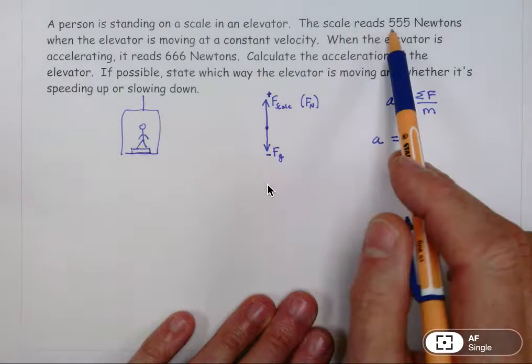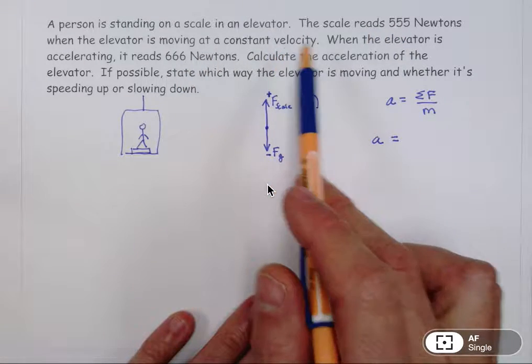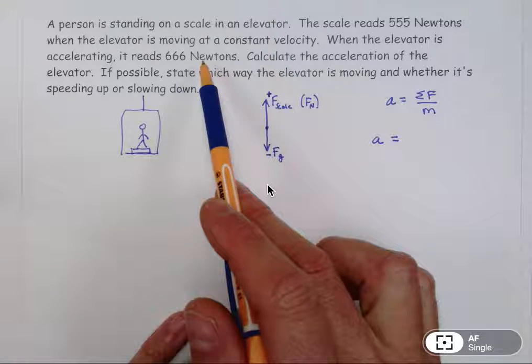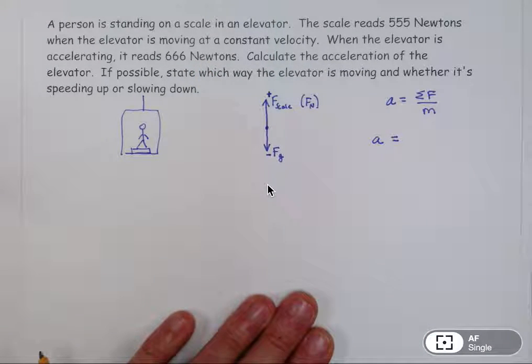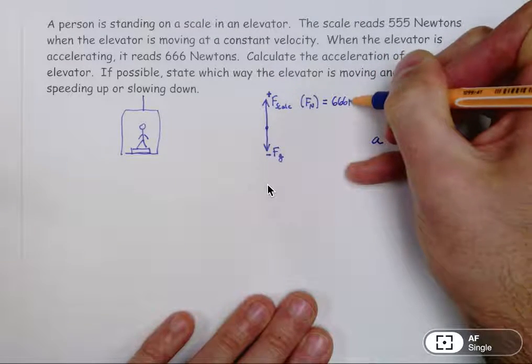And that's where the numbers that we see in the statement of the problem are going to help us out. It says that the scale reads 555 newtons when the elevator is moving at a constant velocity. And when the elevator is accelerating, it reads 666 newtons. And we want to calculate the acceleration of the elevator. So in the situation that we're interested in, which is the accelerating situation, the scale reads 666 newtons. So that means that this force is 666 newtons.